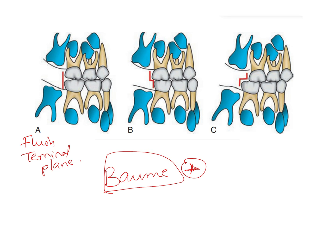In the second relationship, the distal surface of the mandibular molar is slightly mesial to the distal surface of the maxillary molar. The nomenclature is based on the position of the mandibular molar's distal surface. When the distal surface of the mandibular molar is more mesial, this is called the mesial step.